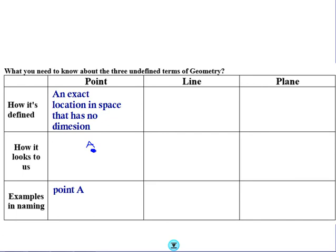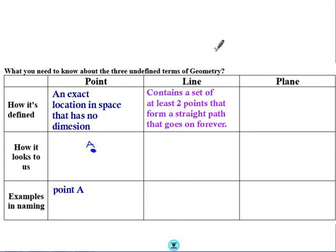A line. What is a line? A line contains a set of at least two points that form a straight path, and it goes on forever and ever and ever. Typically, this looks something like this. You would want to call that AB.